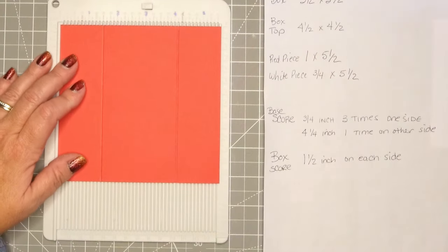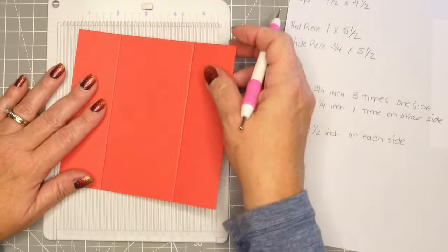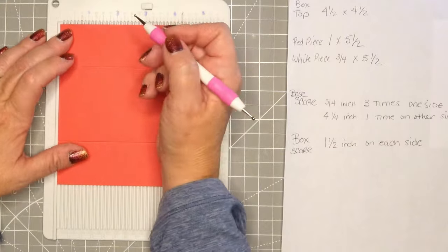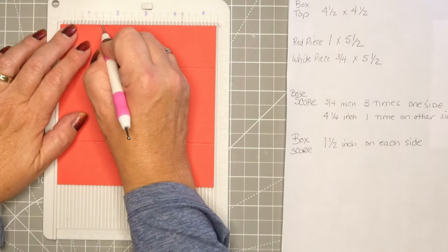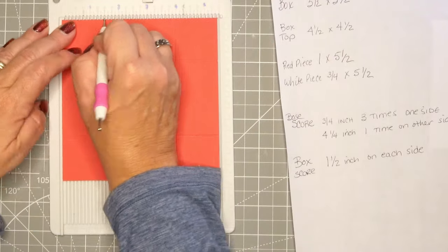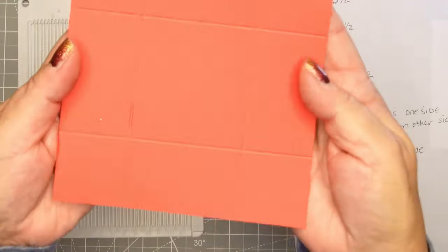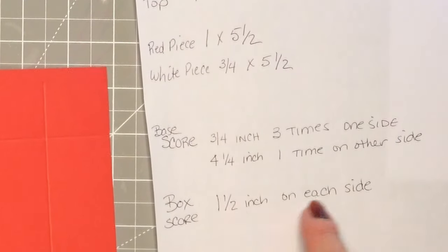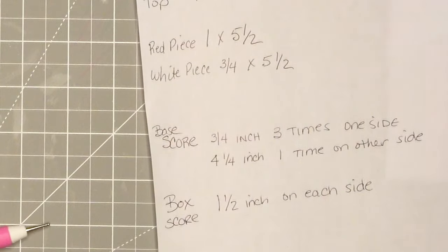Then you take the red piece which is the box itself and you're going to score that at 1.5 inches on all sides. And again I just flip it around because I have one little scoreboard and I have some cheat marks on there, but it's 1.5 on all four sides.